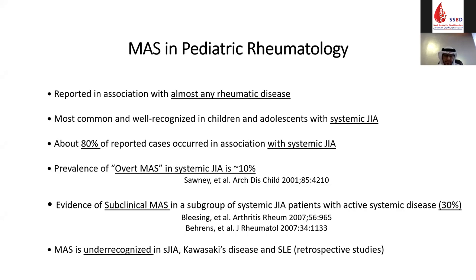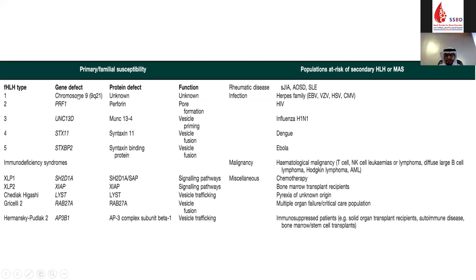MAS is also seen with Kawasaki disease, systemic lupus erythematosus, juvenile dermatomyositis, and severe autoinflammatory and periodic fever syndromes. Importantly, the different triggers for secondary MAS or secondary HLH include: in pediatric rheumatology — systemic JIA, adult-onset Still's disease, lupus, or Kawasaki; for infections — viruses, especially Epstein-Barr virus; for malignancy — commonly hematological malignancies. Treatment itself — chemotherapy, biologic therapy — might be a trigger, and DMARDs such as methotrexate and etanercept have also been reported to trigger MAS.